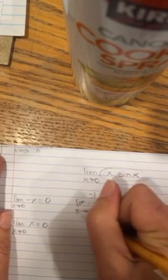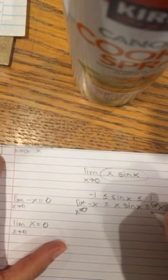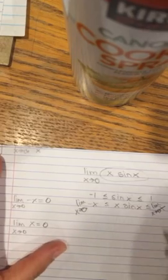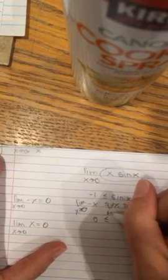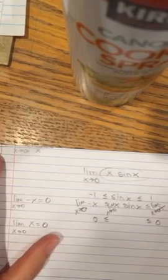So therefore, if I take the limit of the piece that is to the left as x approaches zero, less than my function of interest, and if I take the limit as x approaches zero of the function that is greater than my function of interest, and these are both zero, then I can therefore, by the sandwich theorem, declare that the limit as x approaches zero of x sine of x is also zero.